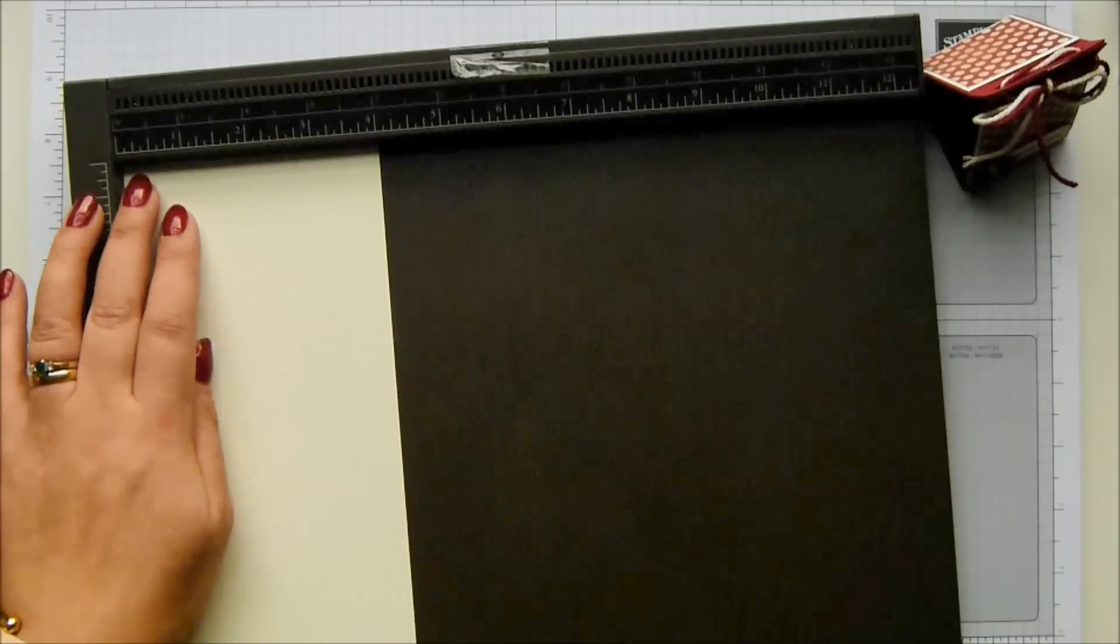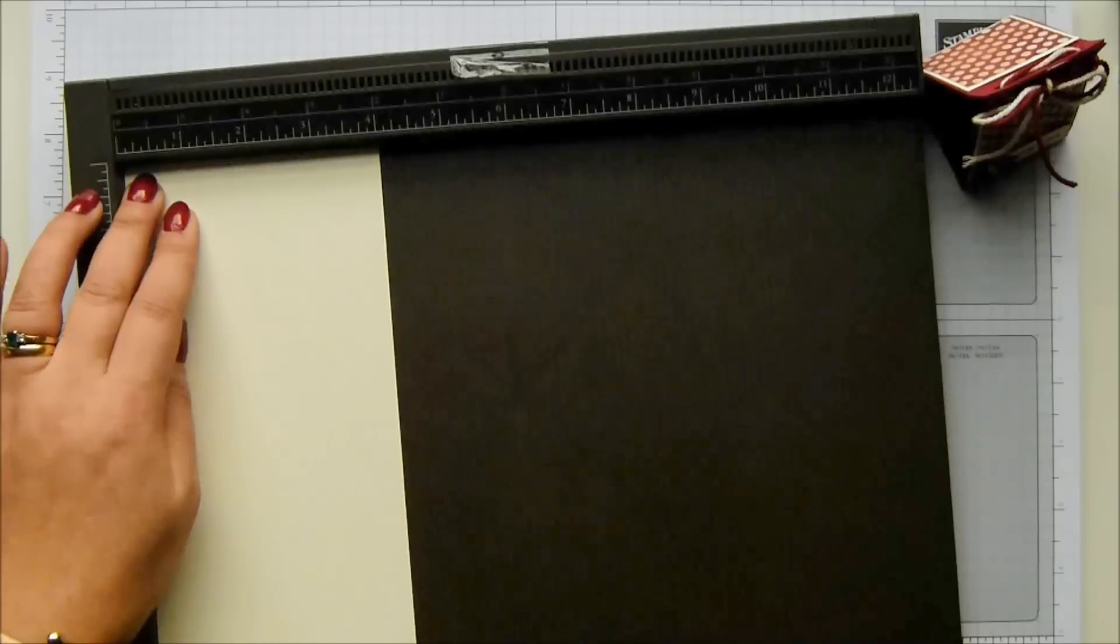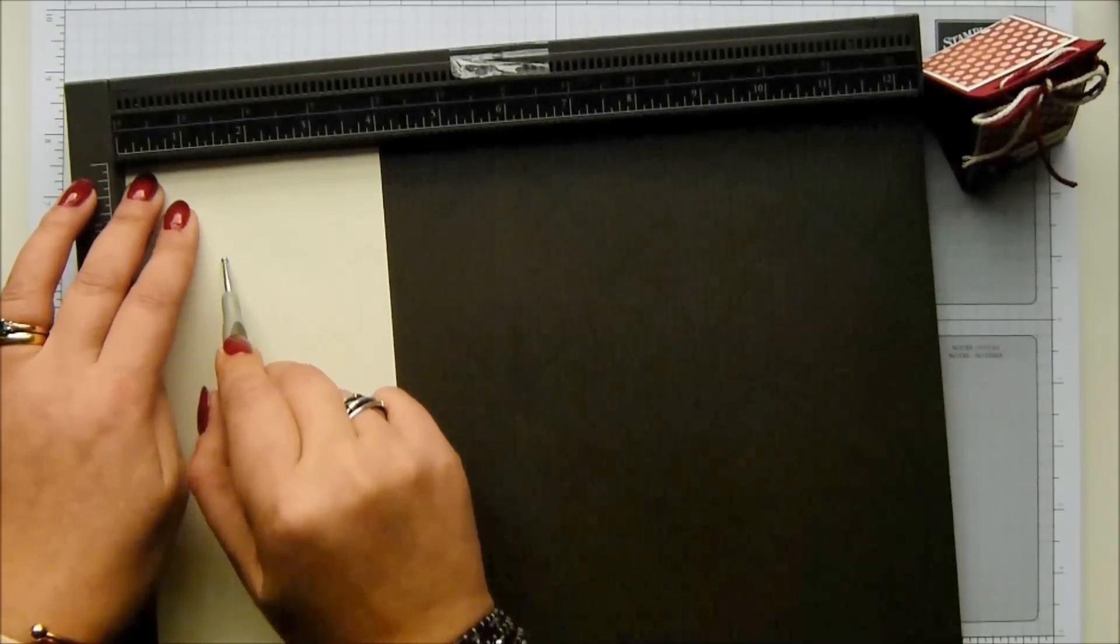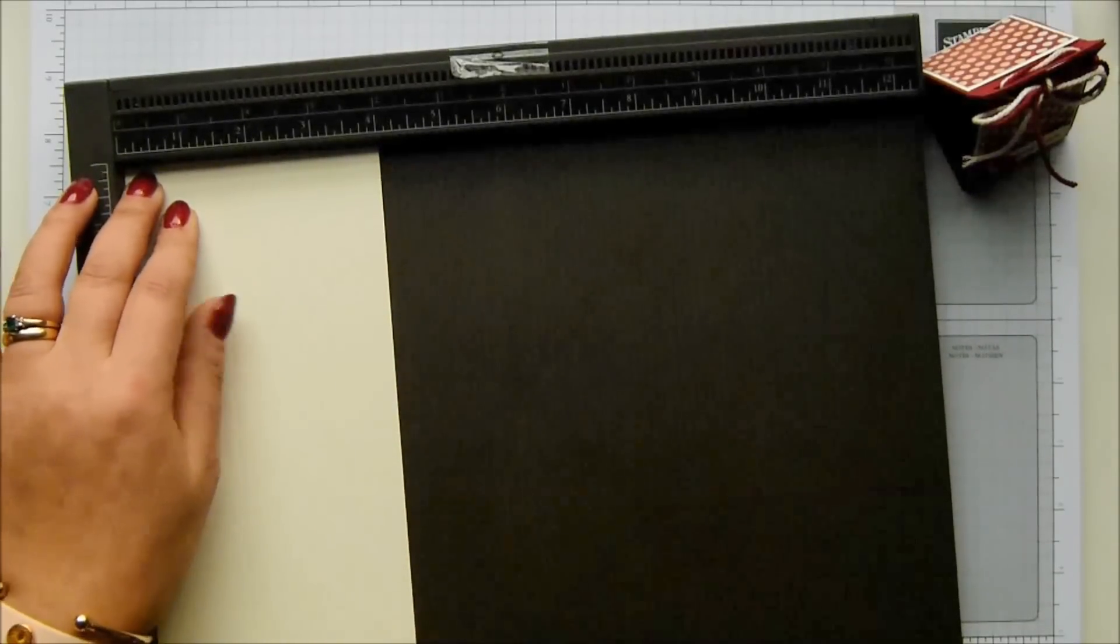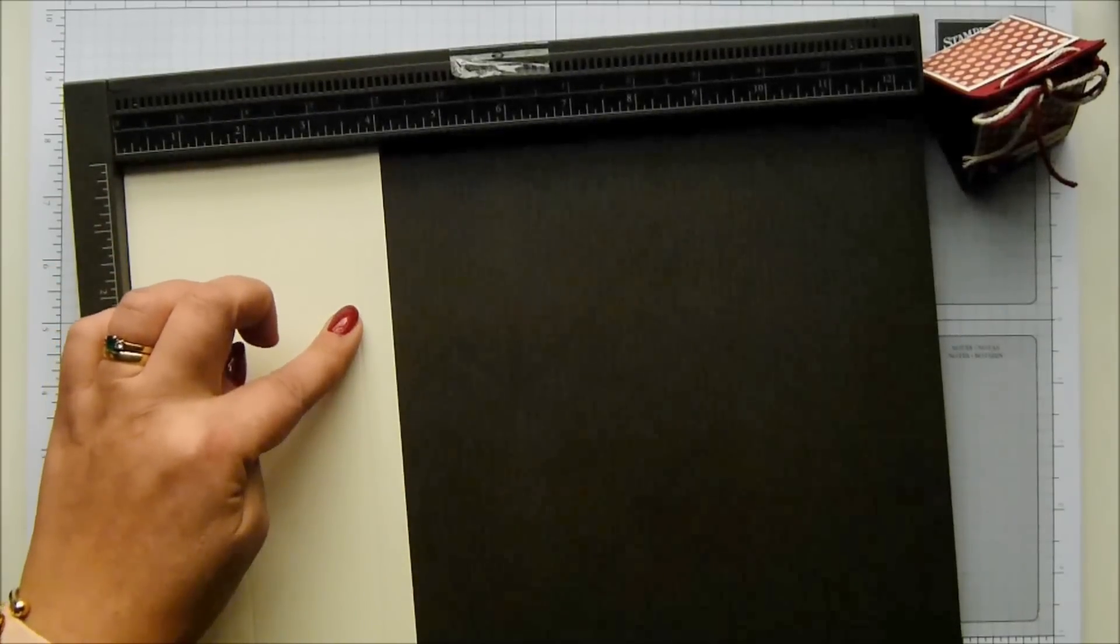First of all, we're going to do the short side first, and I don't normally, but on the short side you score at one and a half and at three and a half inches, which in metric is four and nine centimeters.